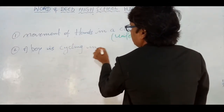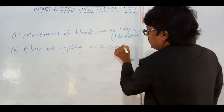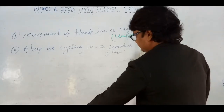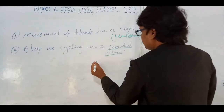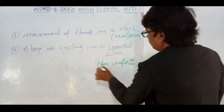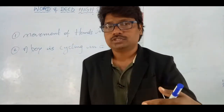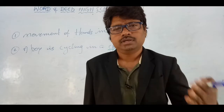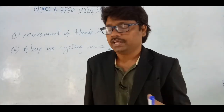Second statement: a boy is cycling in a crowded place. What do you say about the movement of the cycling boy? It's a crowded place, so obviously the movement of the boy cycling in a crowded place is non-uniform motion, because the place is crowded.